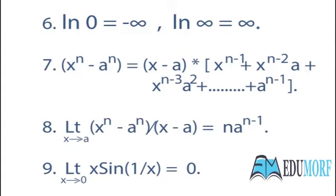Eighth, limit x tends to a of (x^n − a^n) upon (x − a) is equal to n into a raised to the power n minus 1. One thing we should keep in mind is that this identity is correct only if the limit of x is tending to a, and for all other identities and equations that we are going to learn, this must be kept in mind.